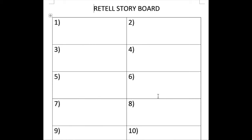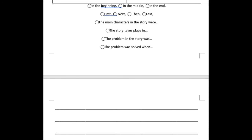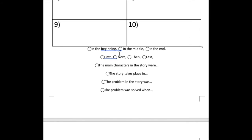The Grade 1 approach sees students illustrate a picture after every page they've encountered, then write a corresponding sentence describing what they have just discovered, hopefully utilizing transition words in the process.